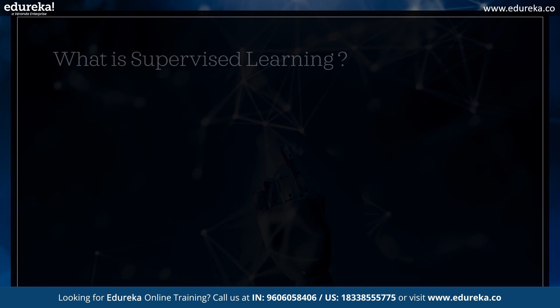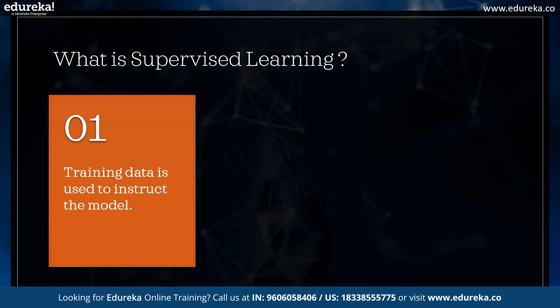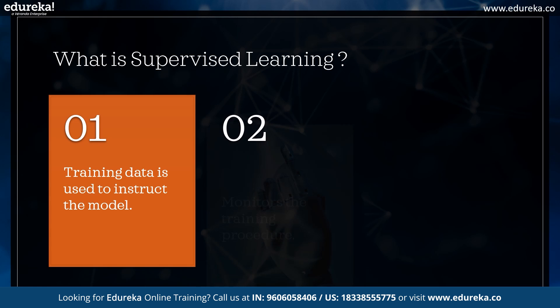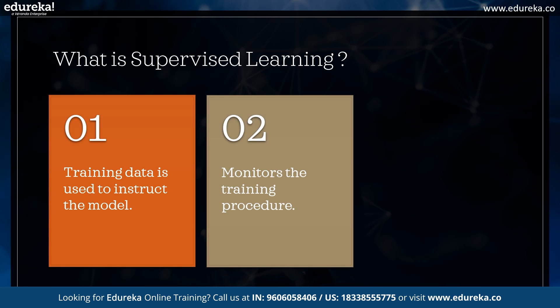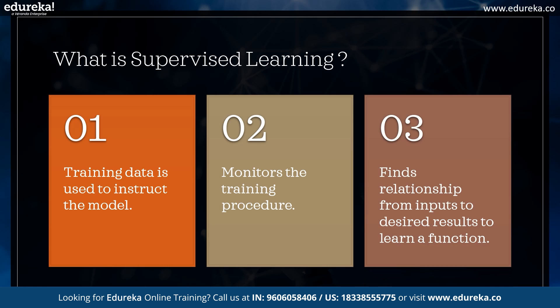The first question is: what is supervised learning? It is a type of machine learning in which a model is trained using labeled training data. You supervise the learning process by giving the model both the input data and the correct answers, so the model learns a function that maps inputs to outputs. This function can then be used to make predictions on data that has not yet been seen.